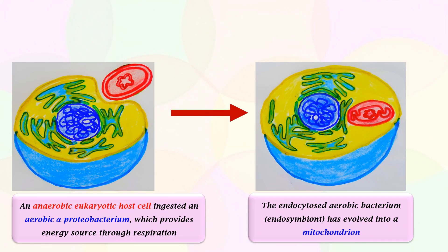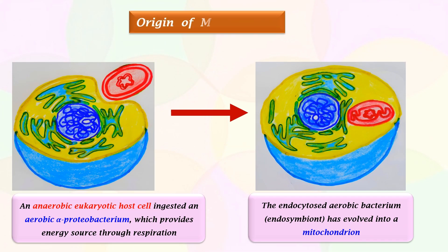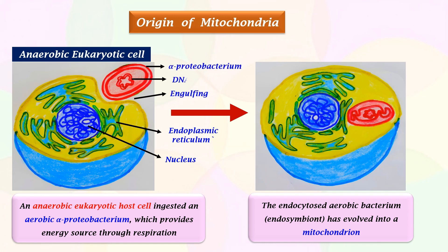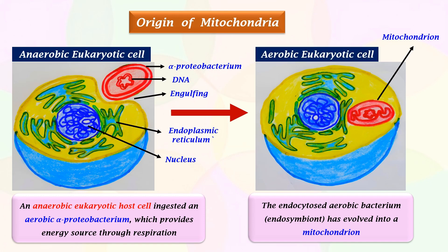The first and foremost step in endosymbiotic theory is the origin of mitochondria. This is the anaerobic eukaryotic cell with organelles such as endoplasmic reticulum and nucleus. This eukaryotic cell engulfed the aerobic alpha-proteobacterium, which has DNA. The endocytosed proteobacterium has evolved into a mitochondrion. As the endosymbiont is aerobic, it provided an energy source to the host cell, eventually transforming it into an aerobic eukaryotic animal cell.